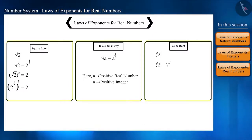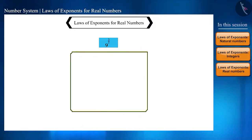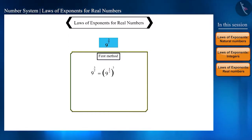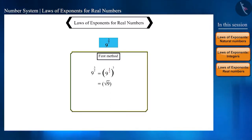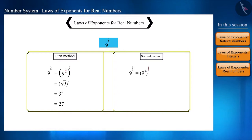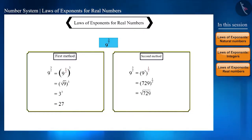Consider 9 raised to the power 3 by 2. In the first method, it is written as the square root of 9, whole raised to the power 3. The square root of 9 is 3, so 3 raised to the power 3 gives 27. In the second method, we first take the cube of 9, which is 729, and then 729 raised to the power 1 by 2 is the square root of 729, which also equals 27.